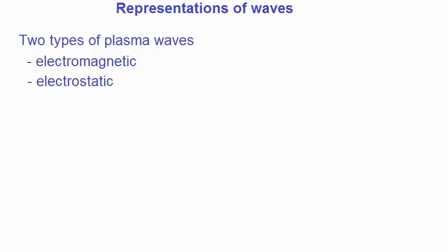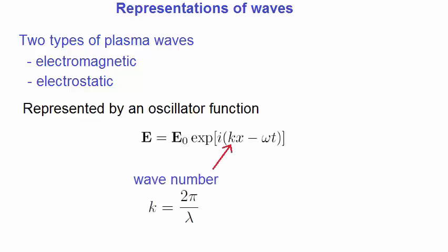How do we mathematically represent waves? In plasma physics, there are two types of waves: electromagnetic and electrostatic. All plasma waves can be represented by some kind of sinusoidal function, given in this form, where k is the wave number, which is 2π on the wavelength, and ω is the angular frequency, where f is the frequency.